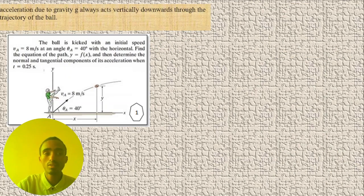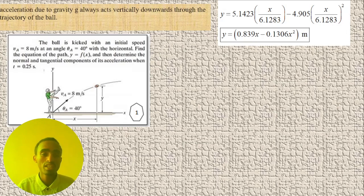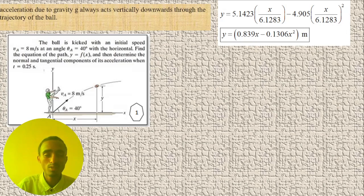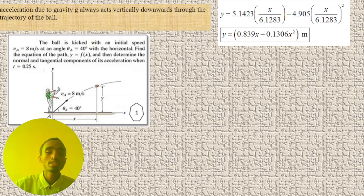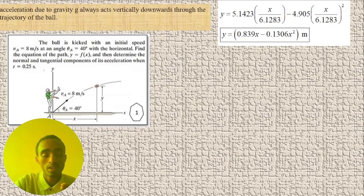The acceleration due to gravity acts perpendicular and downward. We can now determine the equation of the trajectory or path. As you know, the path of projectile motion is a parabolic shape — a downward parabola. To find this equation, we substitute the expression for time t, noting that time is the same for both horizontal and vertical motion.